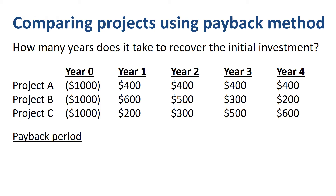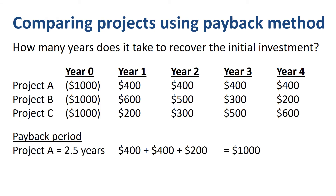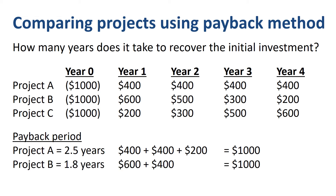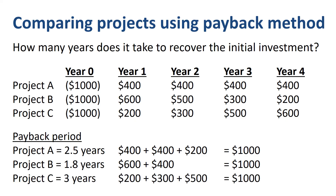Applying the payback method can help. We already calculated the payback period for project A at 2 and a half years. Project B has a payback period of 1.8 years: $600 in year 1, and, assuming we have benefits evenly spread over the year, $400 of the year 2 benefits. Project C has a payback period of 3 years: $200 in year 1, $300 in year 2, $500 in year 3.